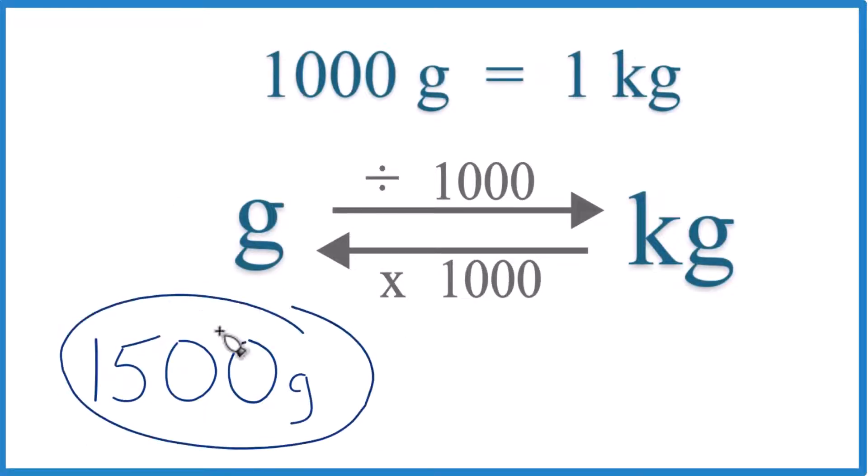Let's convert 1,500 grams to kilograms. Here's how you do it. You need to memorize that 1,000 grams equals 1 kilogram. This is our conversion factor, and we need it to convert from grams to kilograms and back.